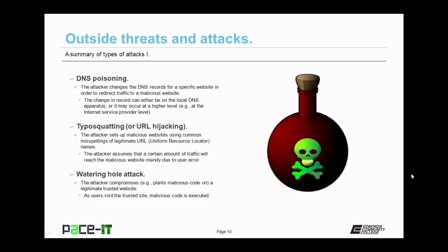Typo squatting, otherwise known as URL hijacking, is another common type of attack. The attacker sets up a malicious website using common misspellings of legitimate URL names. The attacker assumes that a certain amount of traffic will reach the malicious website merely due to user error, and they are correct — they will get a certain amount of traffic due to misspellings. Then there is the nefarious waterhole attack. The attacker compromises a legitimate trusted website, meaning they have planted malicious code on it. As users visit the trusted website, the malicious code is executed and the attack is completed.